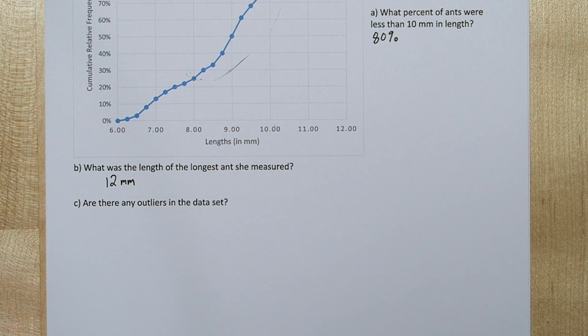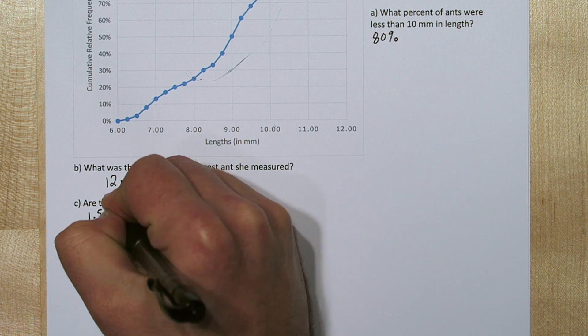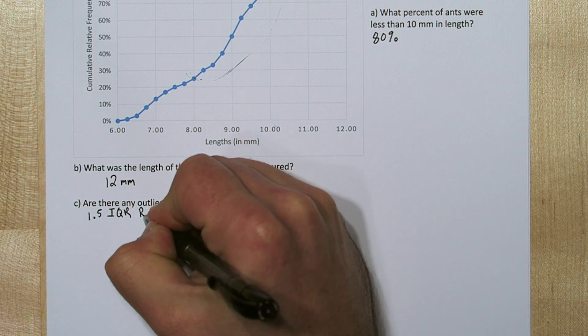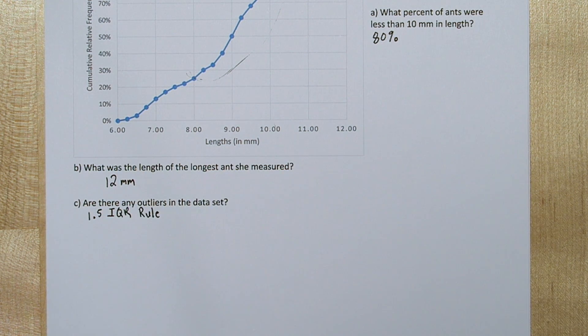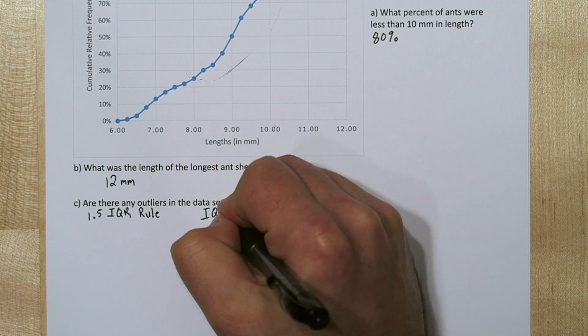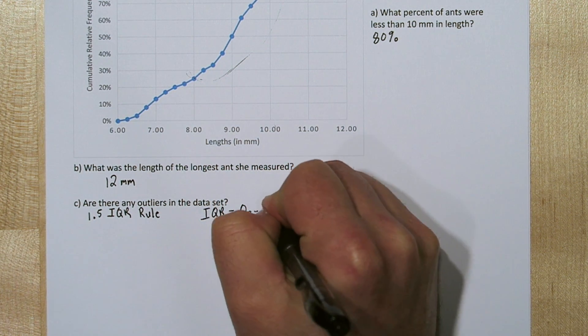In the last part, we're trying to figure out if there's outliers in the data. Now to find outliers, we use the 1.5 IQR rule. So we need to determine the IQR. IQR is quartile 3 minus quartile 1.